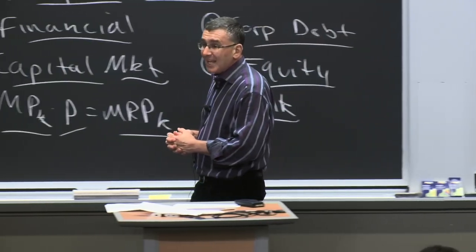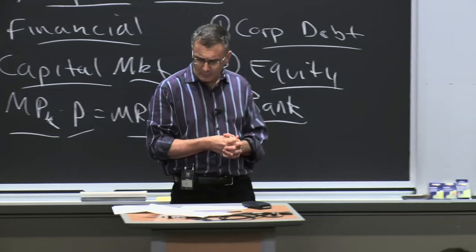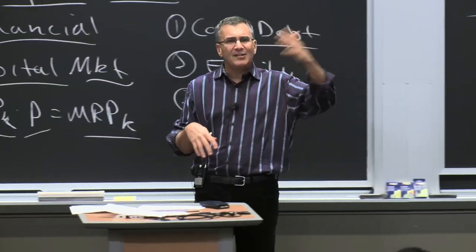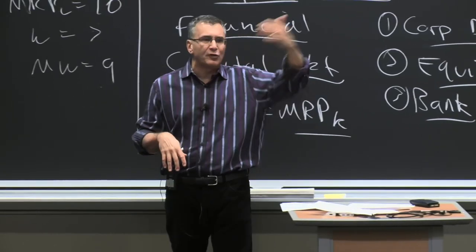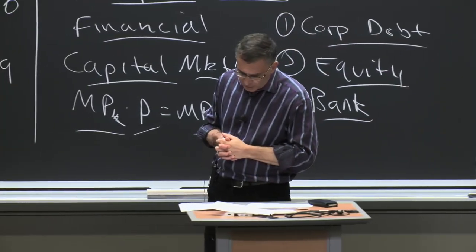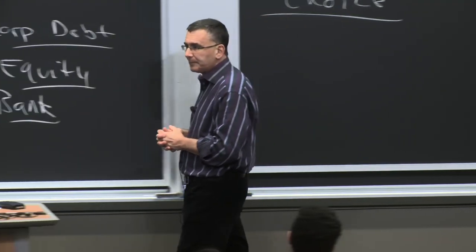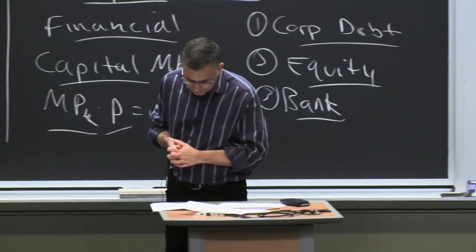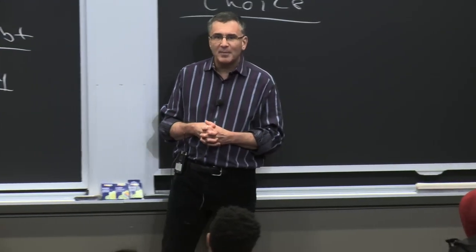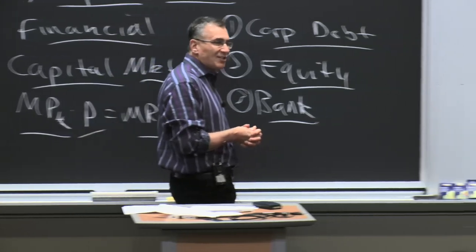What determines how much you save is your decision of how much you value money today versus money tomorrow. For ease, let's consider two periods — this year versus next year. Let's imagine prices aren't going to change — no inflation. And let's say my income is $80,000 a year but I'm going to take next year off unpaid. So I'll work this year for $80,000 and next year take time off. I could spend all $80,000 and have nothing next year, or save it all to live on next year, or some combination. The key difference is every dollar I don't consume this year, that I save for next year, earns interest.